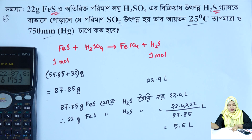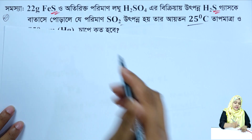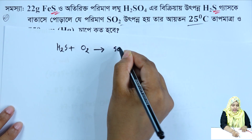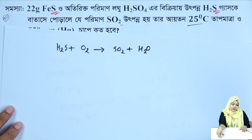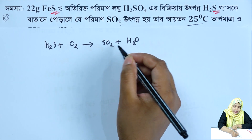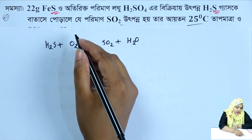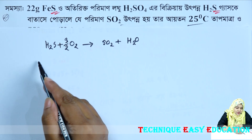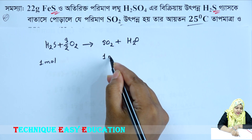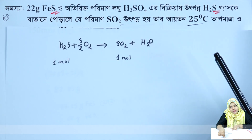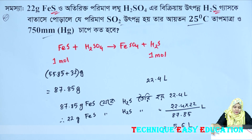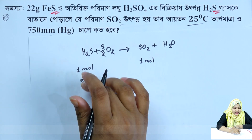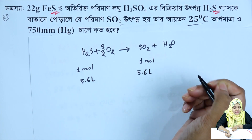We will write the combustion reaction: hydrogen sulfide reacts with oxygen to give sulfur dioxide gas and water. Balancing with 3/2 oxygen. One mole hydrogen sulfide equals one mole sulfur dioxide. So 5.6 litres hydrogen sulfide gives 5.6 litres sulfur dioxide.